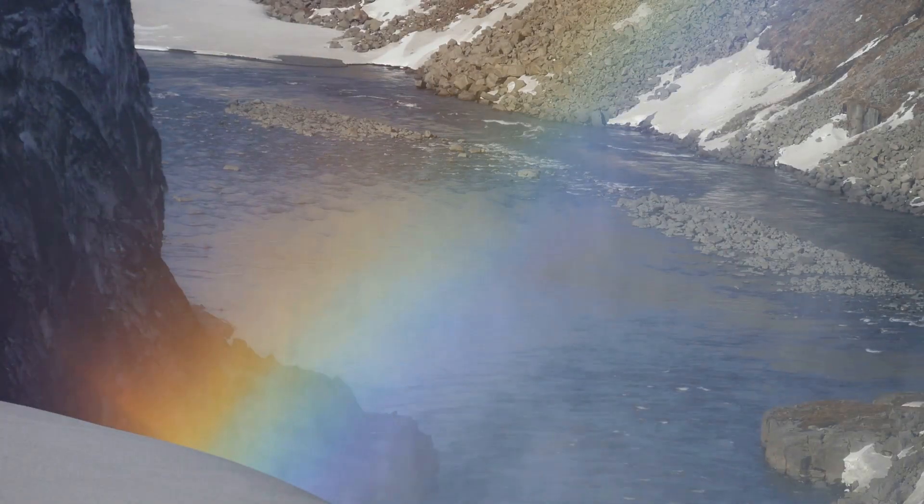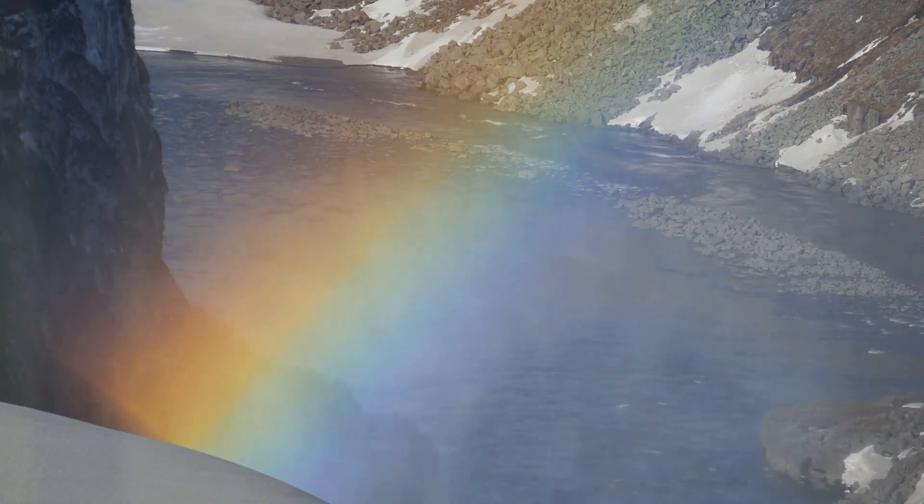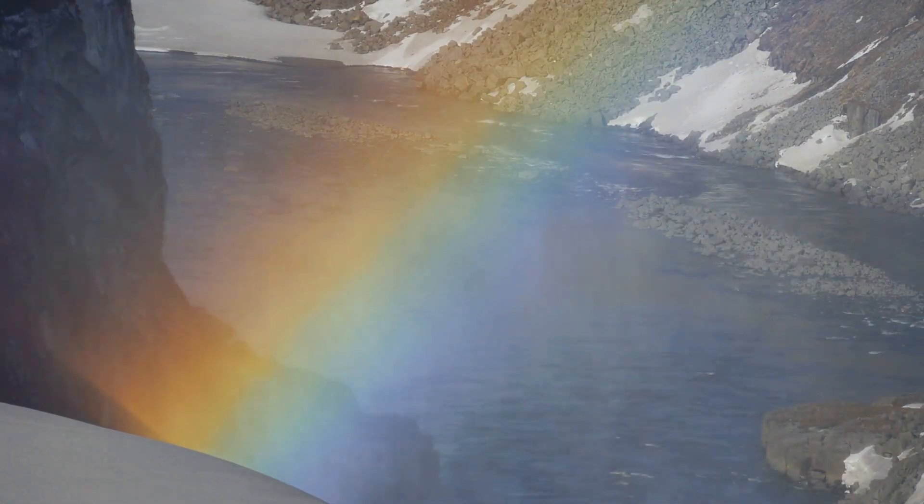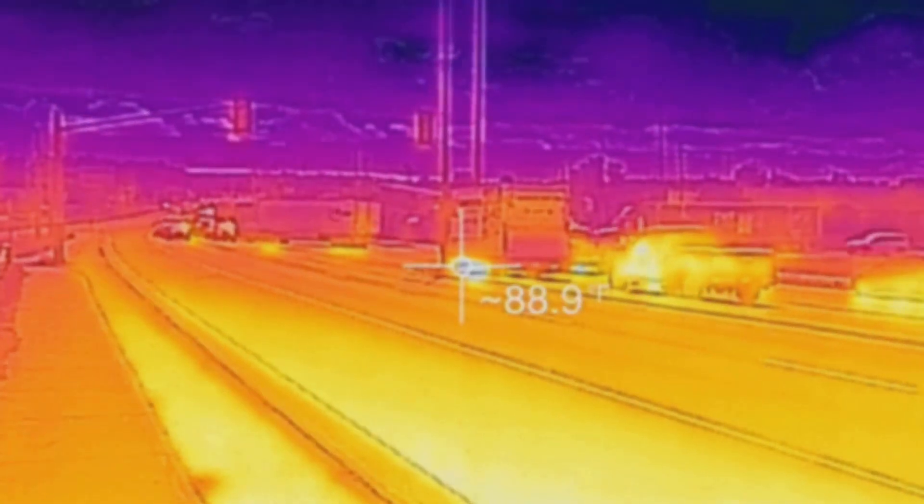While we marvel at a rainbow's seven colors, we remain oblivious to the ultraviolet and infrared hues invisible to our eyes. Beyond the familiar red lies a world of infrared radiation where heat becomes visible. Snakes, for instance, possess special organs that allow them to see infrared, giving them a heat-seeking advantage in hunting prey.